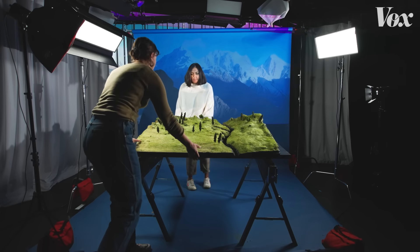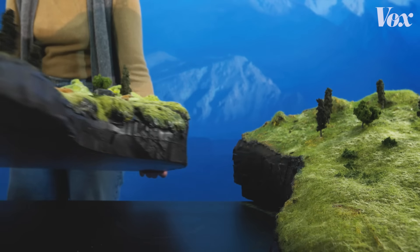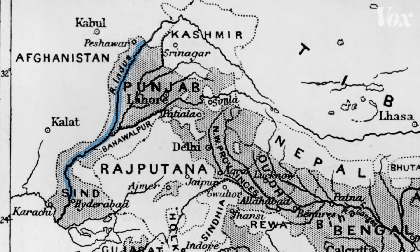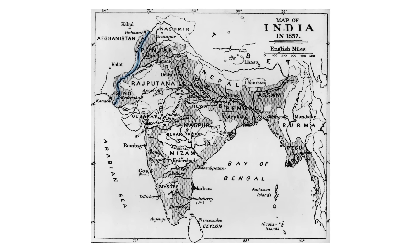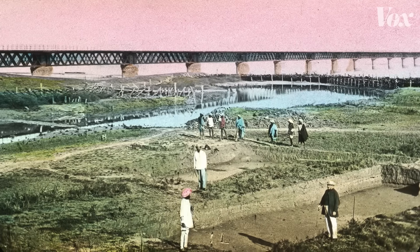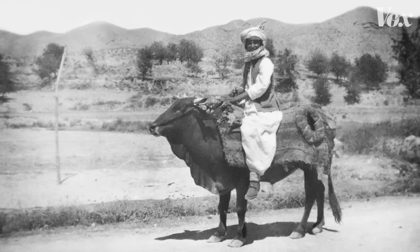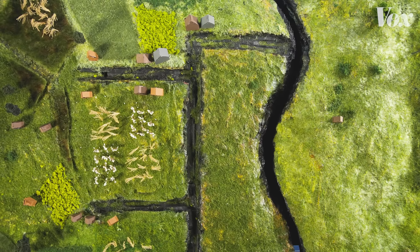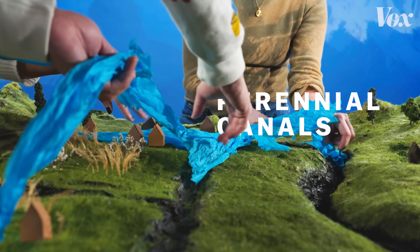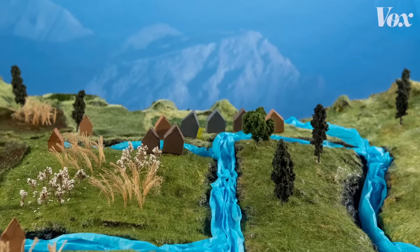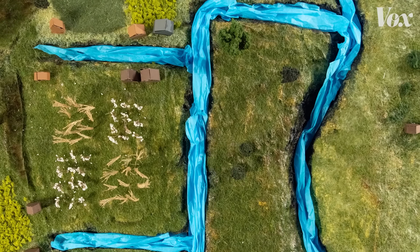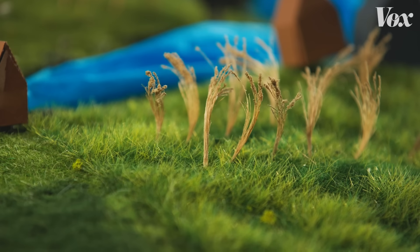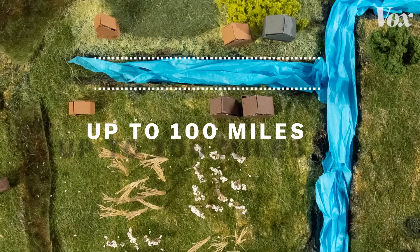In the 1800s, things began to change. After a series of wars, the British took control of the Indus Basin region, and it became part of their Indian empire. The new British rulers wanted to make this region as agriculturally productive as possible. They began building a much larger network of canals, designed not just to capture flood season flow, but to irrigate year-round and extend the river water's reach — irrigating cash crops like wheat and cotton up to 100 miles from a river source.